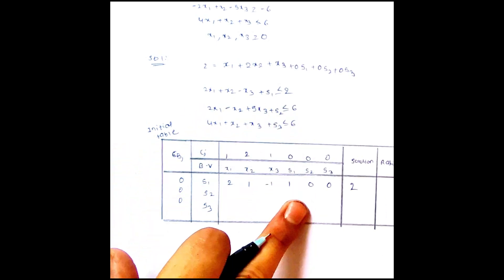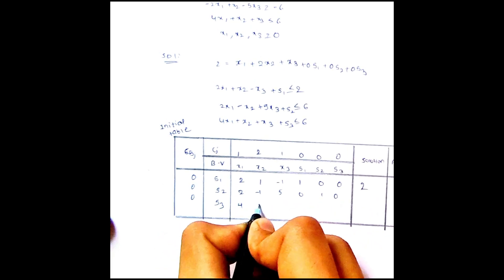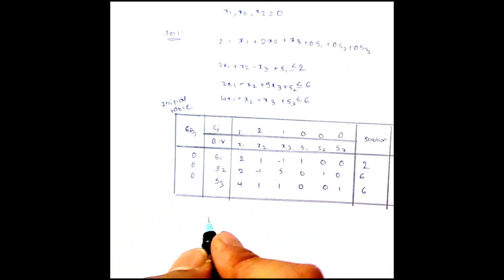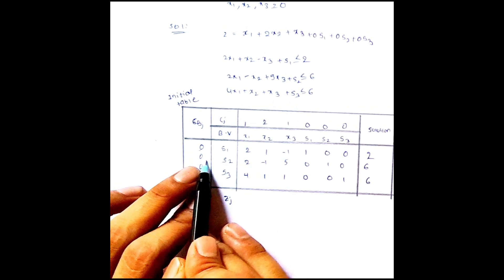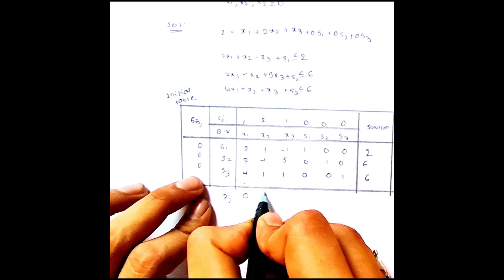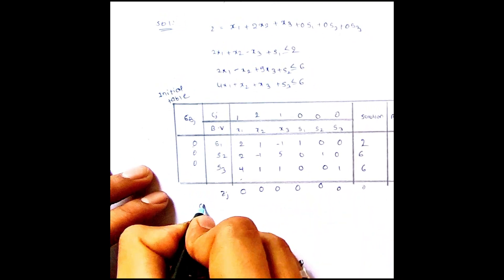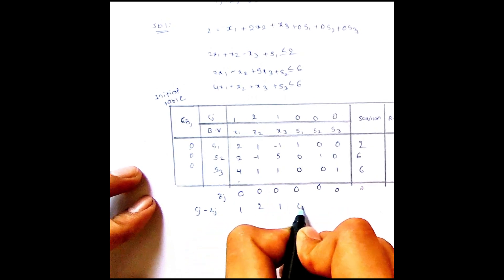We are writing the zj value: cbj multiplied by each column. 0 into 2 plus 0 into 2 plus 0 into 4 equals 0. Similarly, all zj values will be 0. Then we find cj minus zj: 1 minus 0 equals 1; 2 minus 0 equals 2; 1 minus 0 equals 1; 0, 0, 0.